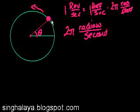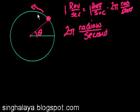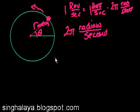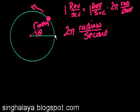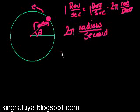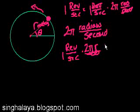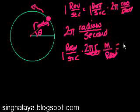Let's think about this. In one revolution, how far has this object traveled? It's traveled the circumference of the circle. To find the circumference, we need the radius r — say r meters. So how many meters does it travel in one second? That's 1 rev/s × 2πr meters/rev, and the revolutions cancel out, giving 2πr meters per second.